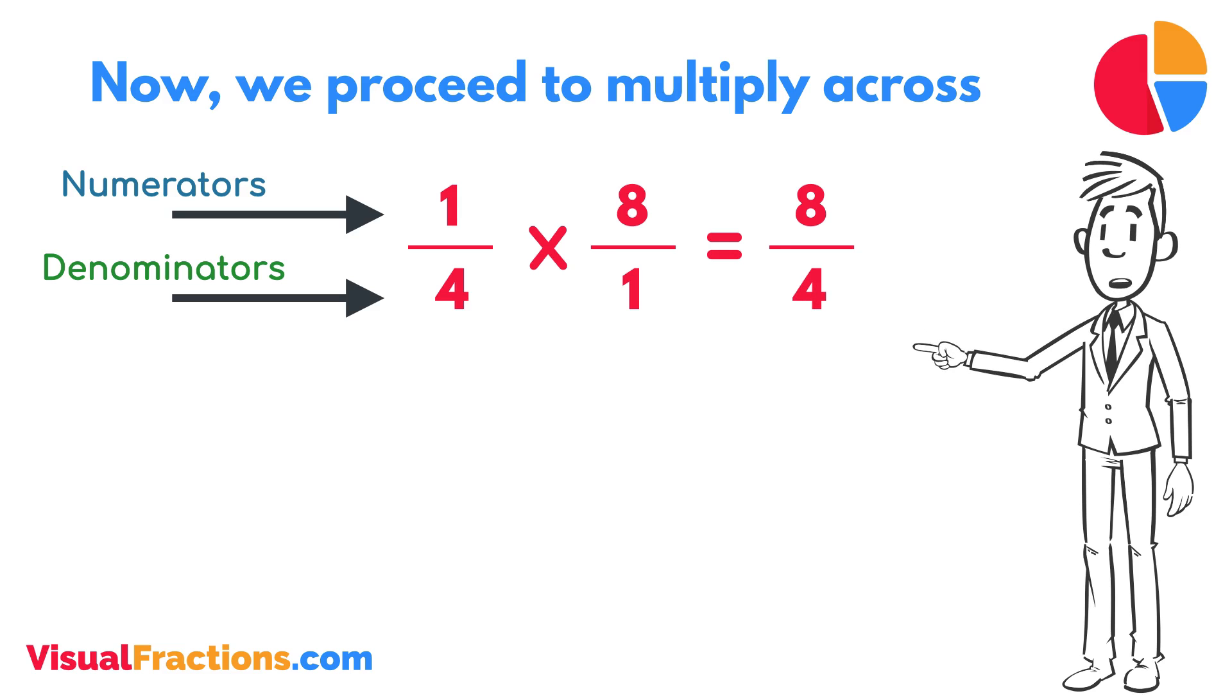We now have a new fraction, 8 quarters. To find the final answer, divide the numerator by the denominator. So, 8 divided by 4 equals 2.